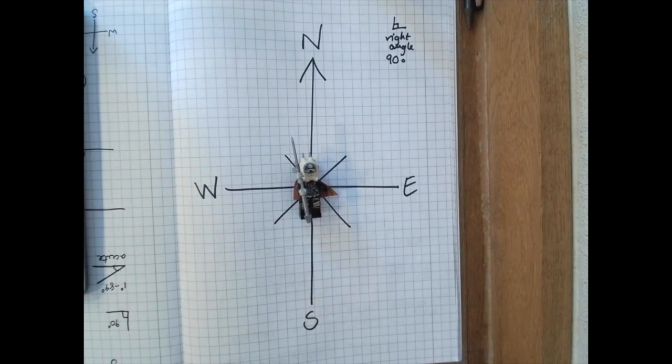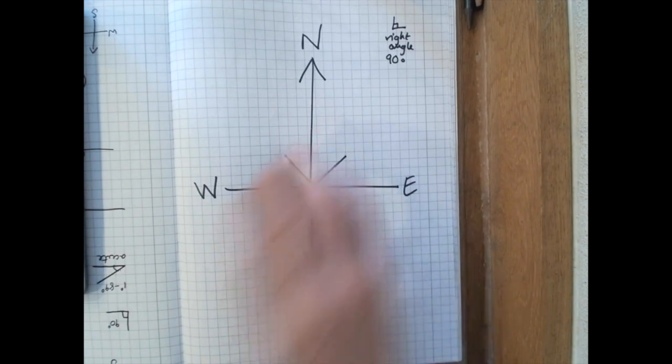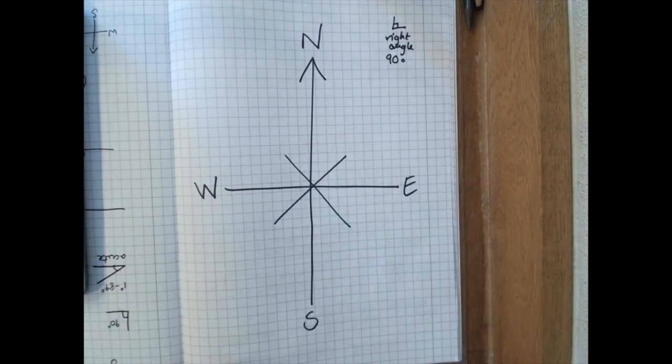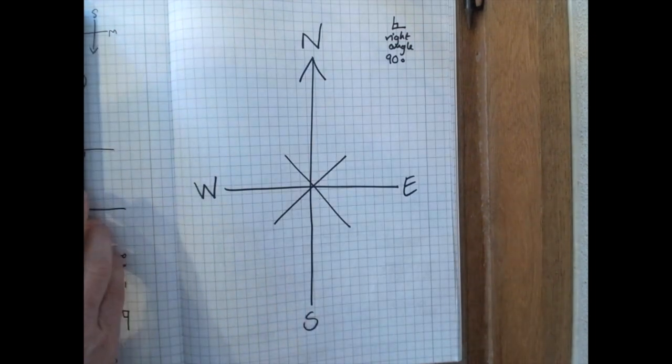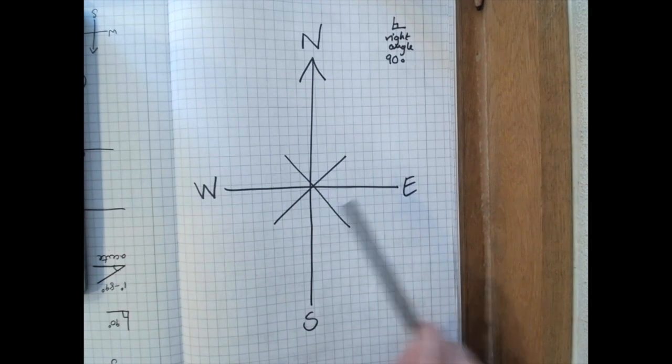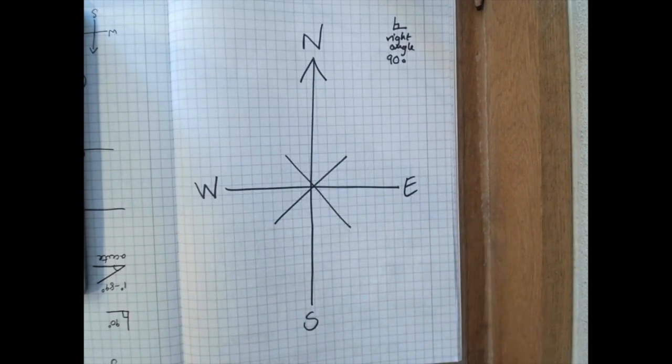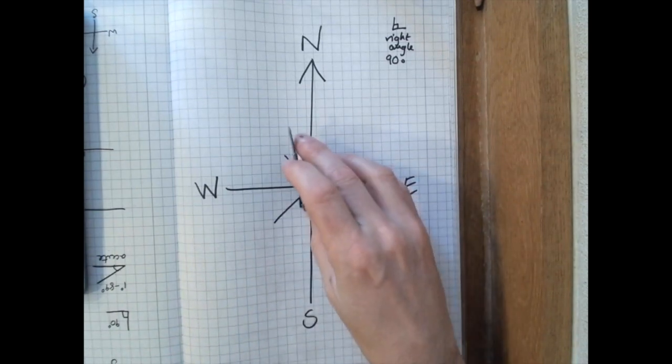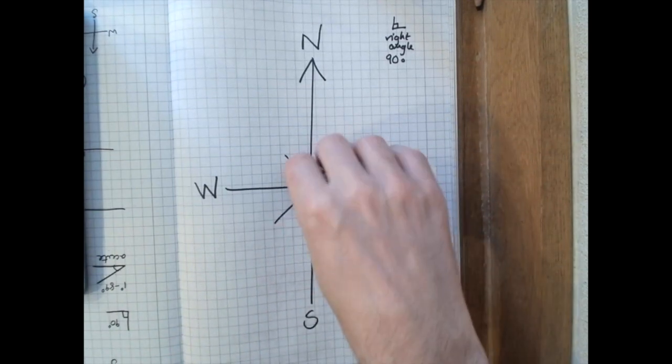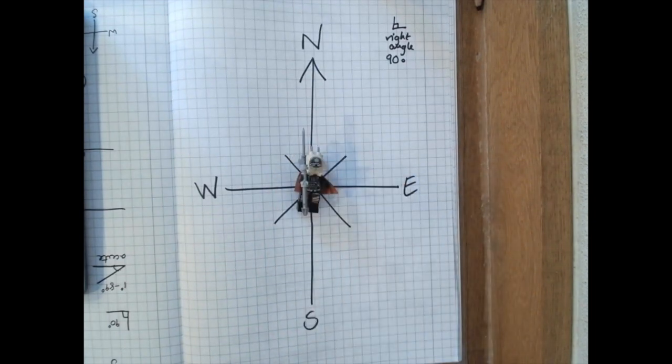Weasel is still pointing north. 90 degrees. We can also call it a quarter turn, or a quarter of a turn. Because if you look at the compass, it's split into four quarters. One quarter, two quarters, three quarters, four quarters. If Weasel turned all the way around, one quarter, two quarter, three quarter, four quarter, she'd be back where she started. One whole.